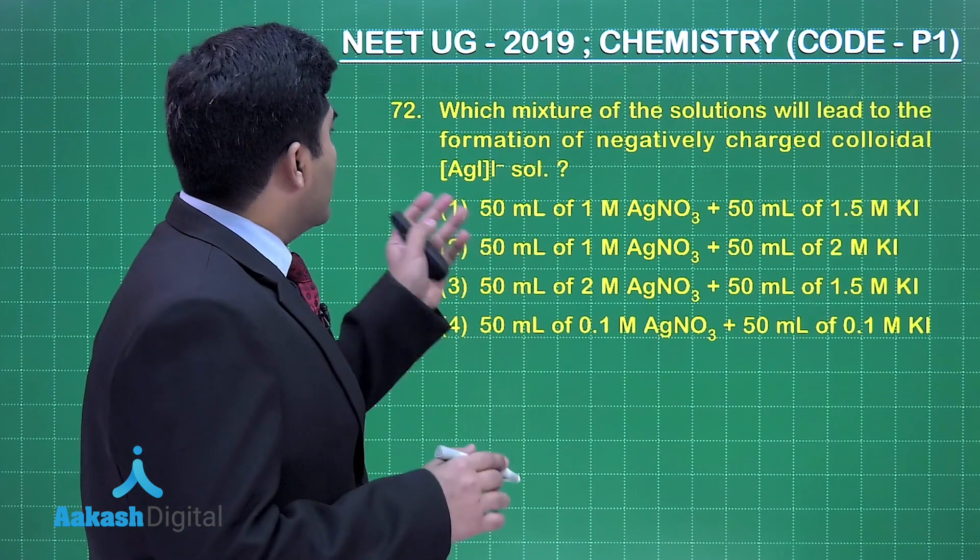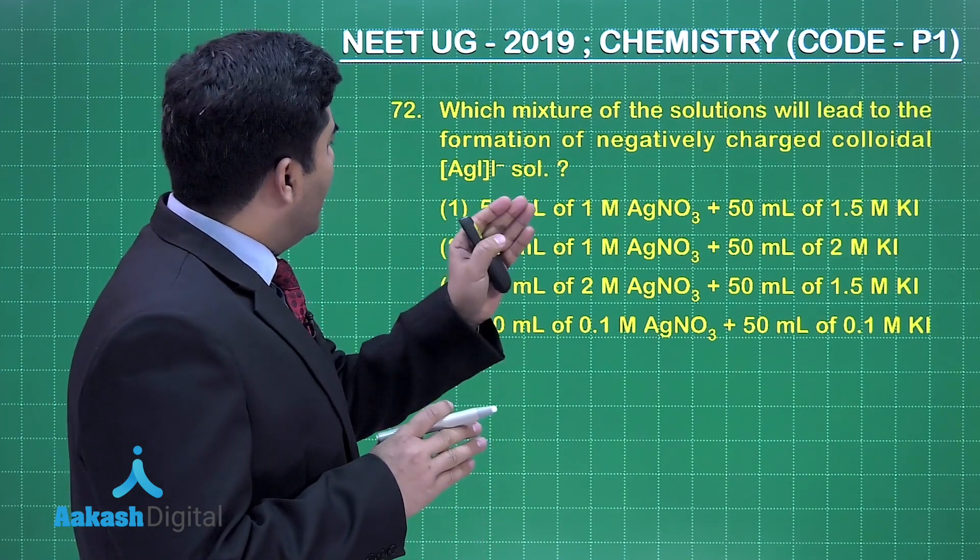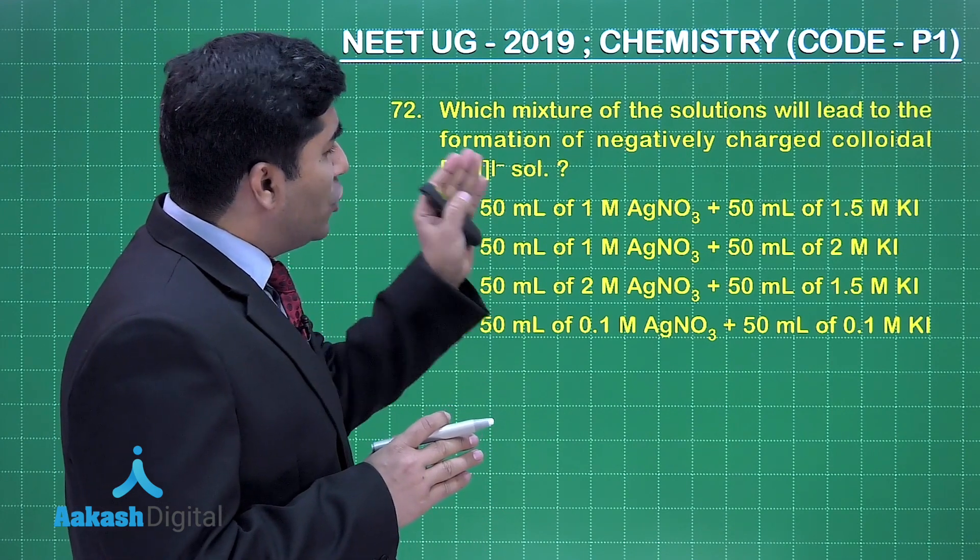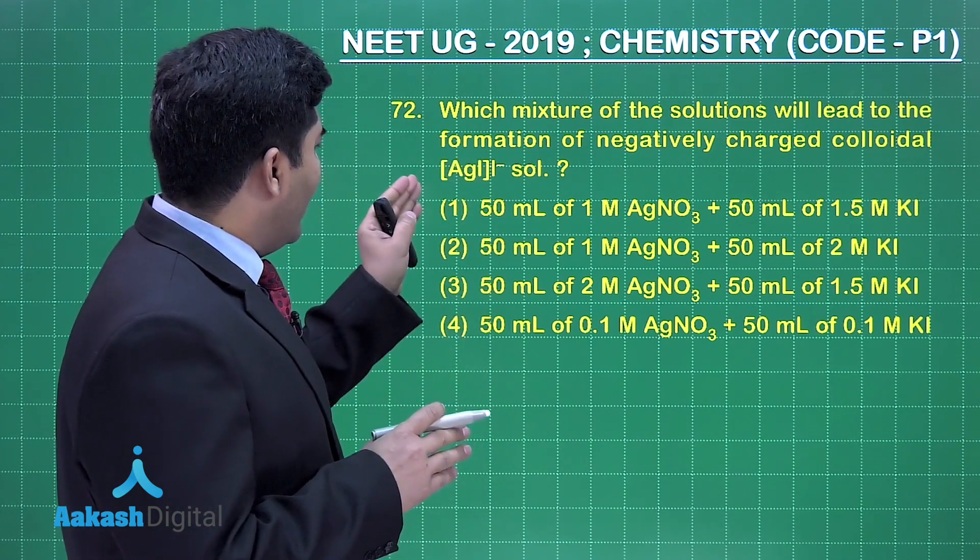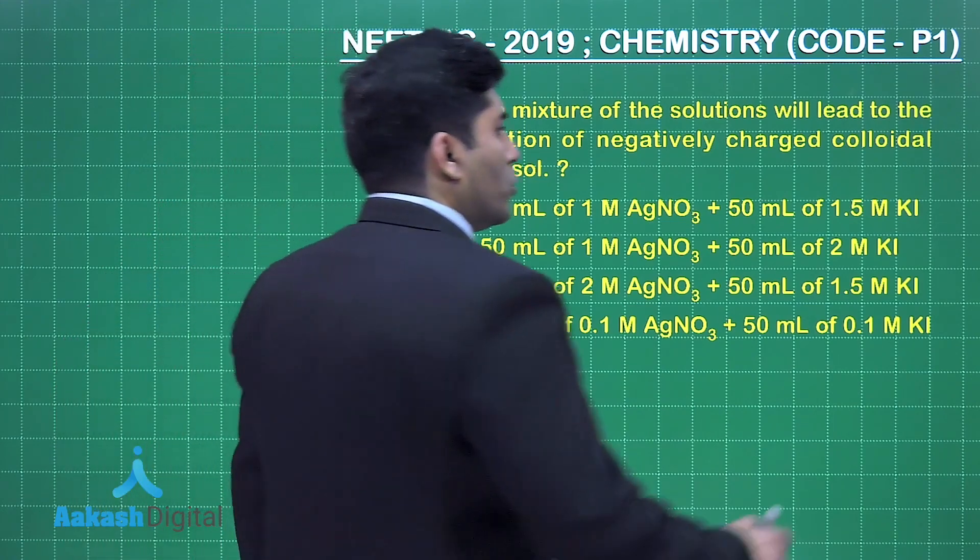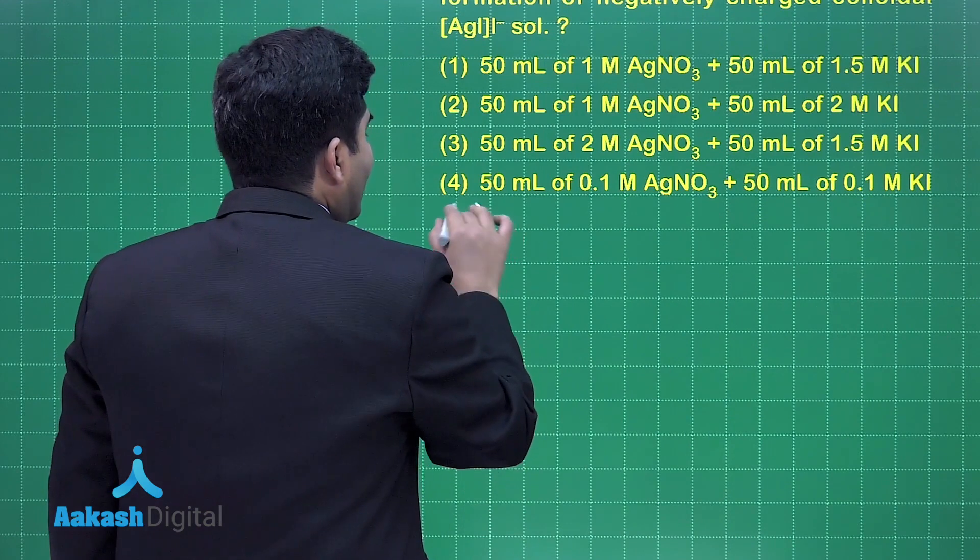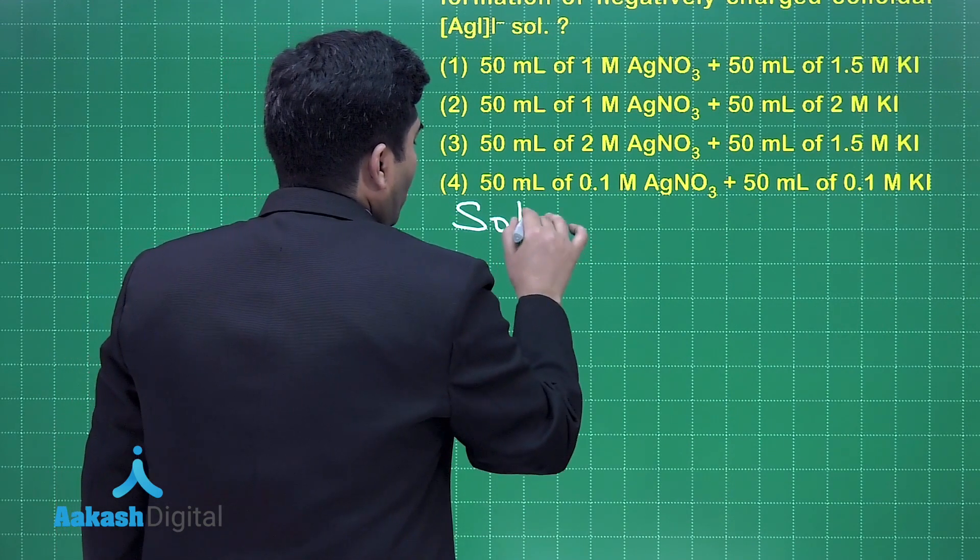Let's move on to the next question. In this question they are asking which mixture of solutions will lead to the formation of the negatively charged colloidal AgI/I⁻ sol. Now first we have to explore the concept of this question.